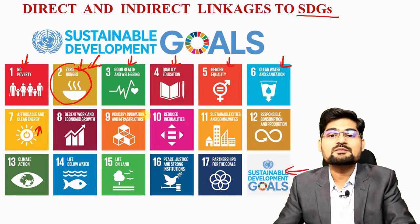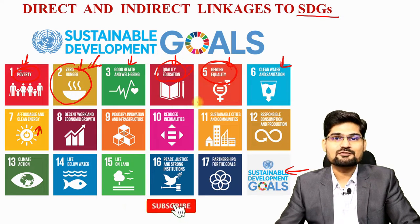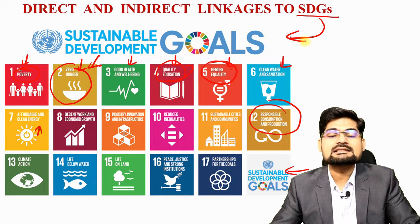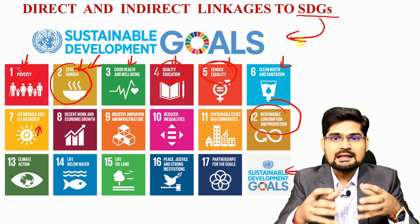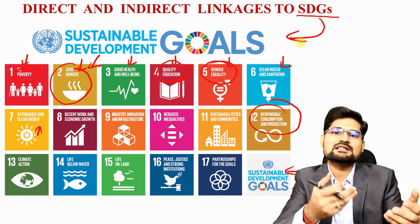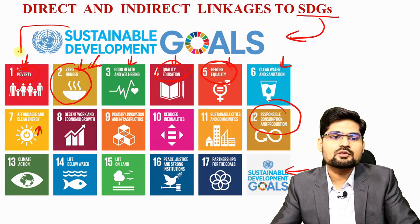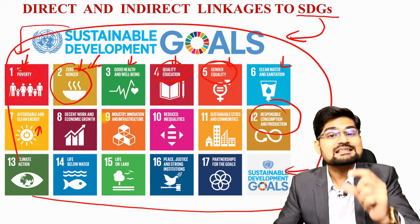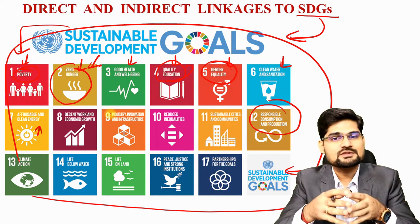What about indirect linkages? All SDGs are somewhere linked to food security. Poverty is linked to food, education is linked to food, gender is linked to food, and responsible consumption and production is linked to food. Every government in the world is aiming to attain sustainable development goals by 2030. Recently, India slipped in rankings on the hunger index, meaning we need to work on all these SDG sectors to actually achieve food security and food sustainability for the future.